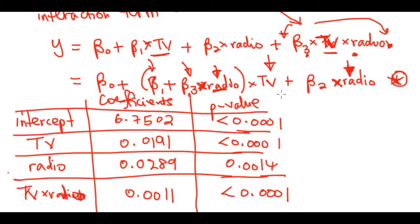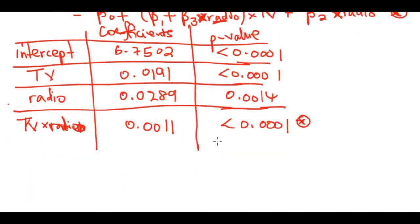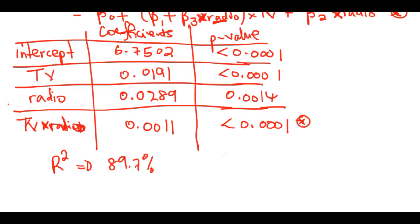This table shows that the interaction term TV×Radio is significant — look at the p-value. So the model with the interaction term is superior to the one with only the main effects of TV and Radio individually. It is clear that the true relationship is not additive — it has these synergy effects. The R-squared for the original model was 89.7%.